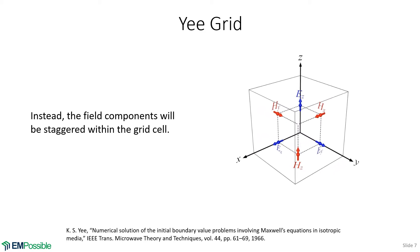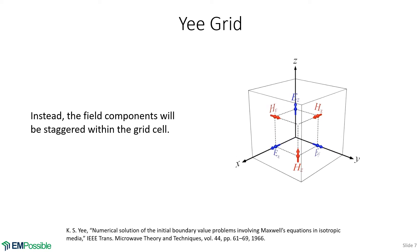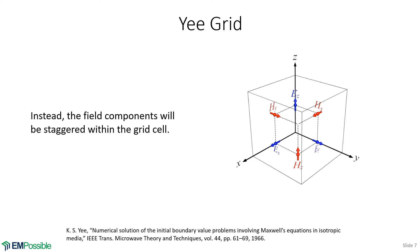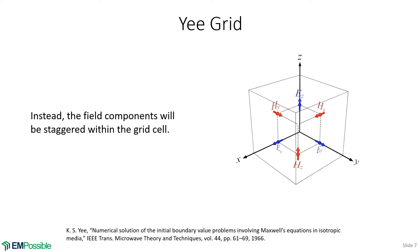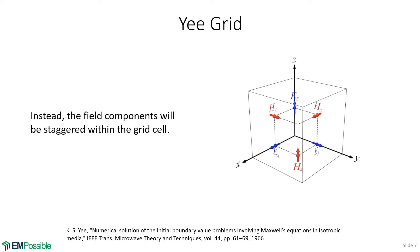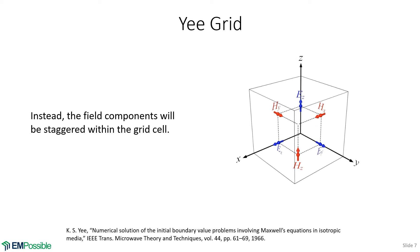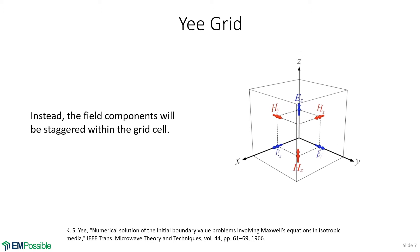There are very good reasons that we stagger the field components like this. Initially, it seems like this is going to be a little bit more complicated. Conceptually, it might be, but this is a very good thing. It simplifies our equations, and there are other properties that are very desirable about a staggered grid that the co-located grid would not have.